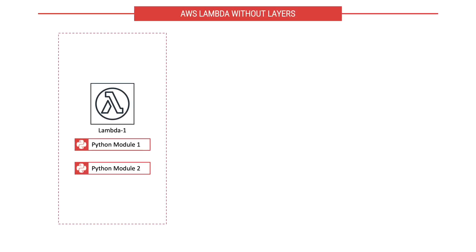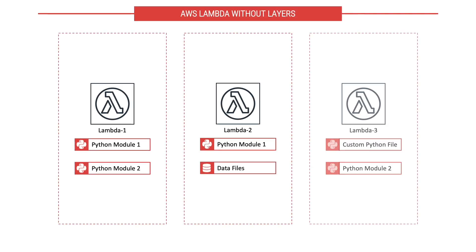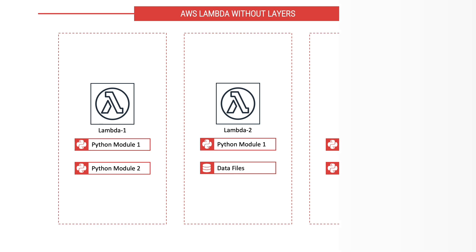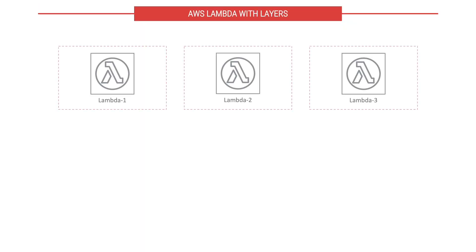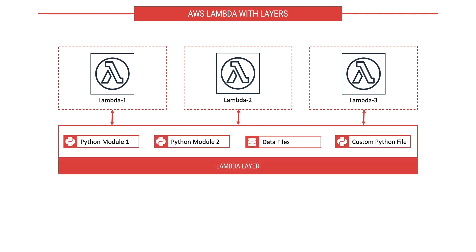Imagine you have a bunch of Lambda functions written in Python or any other runtime which use the same set of third-party Python modules. The only way to achieve this is to include all your third-party libraries in your deployment package. We are basically duplicating the libraries, and the deployment package size will be significantly large compared to your function code. To address this problem, AWS introduced Lambda layers at re:Invent 2018.